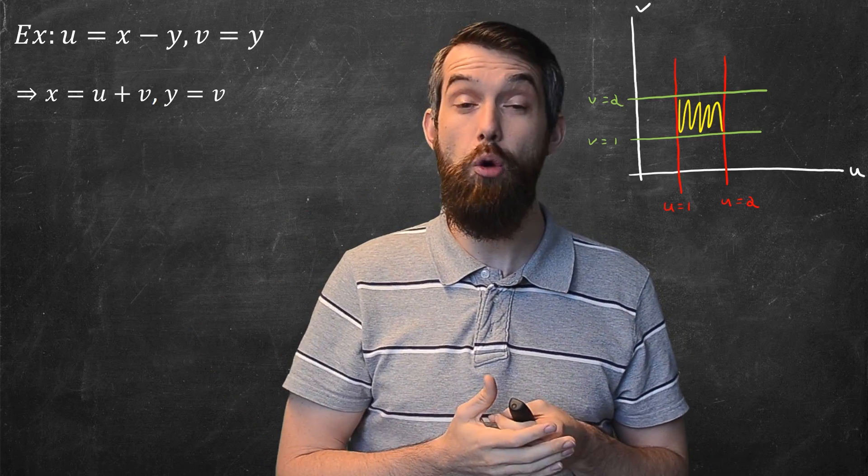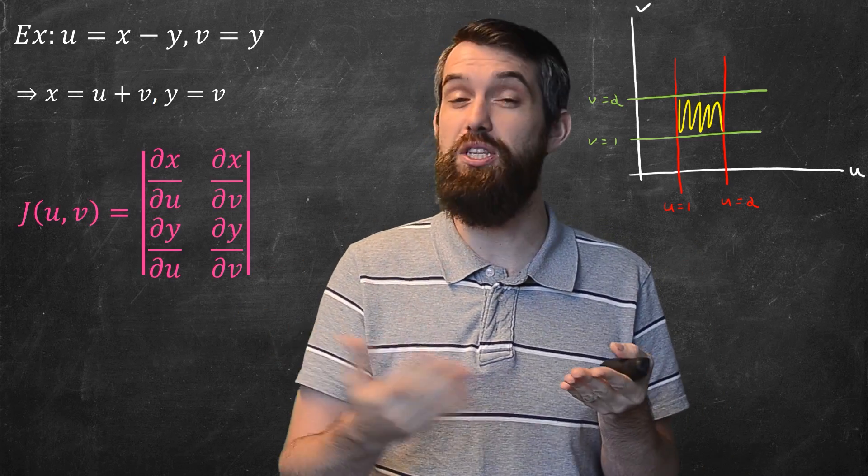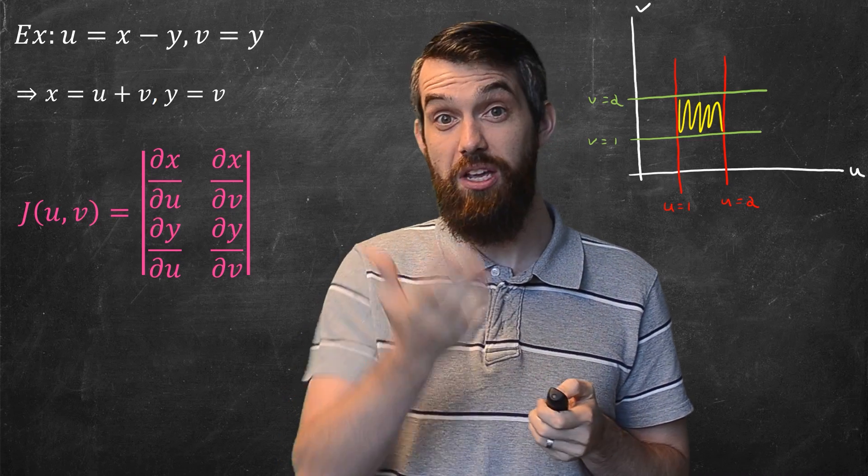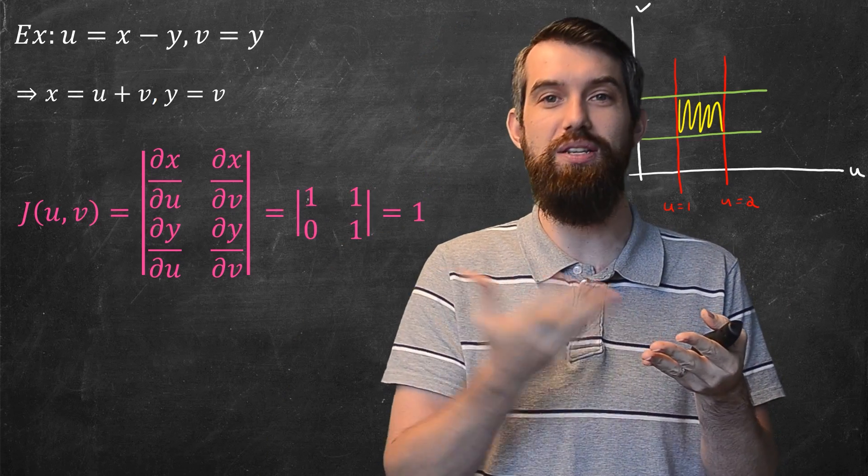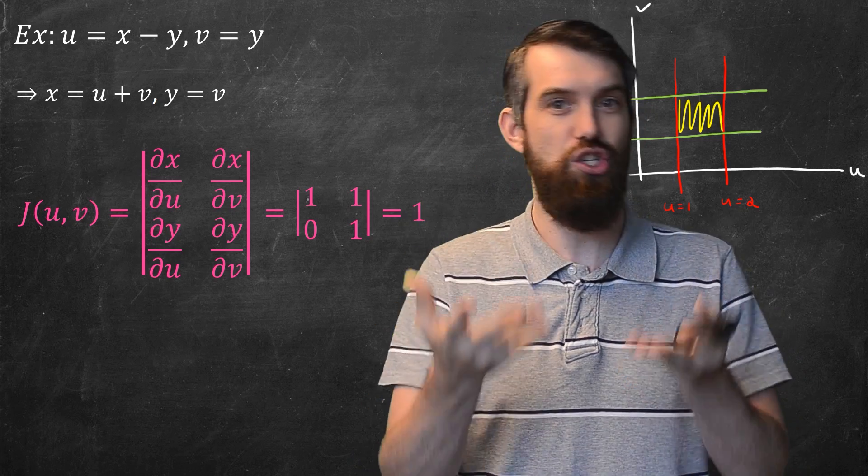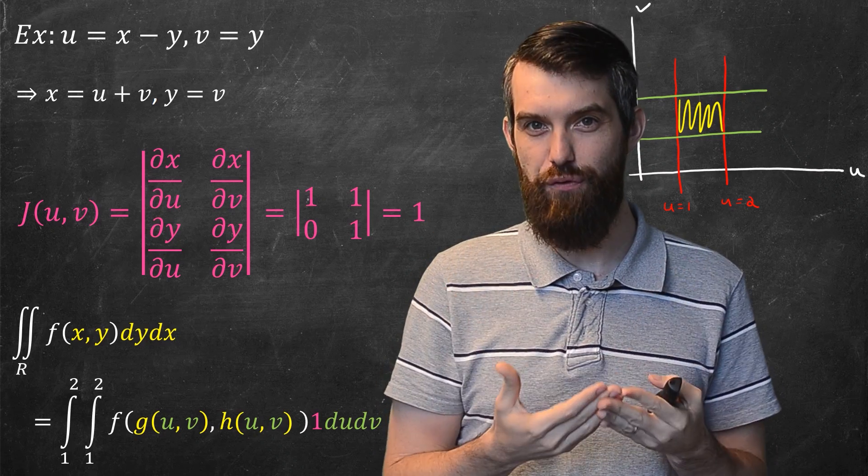All right, so let's compute out that Jacobian, this determinant. Well, most of these partials are straightforward. The partial of x with respect to u? Well, it's just 1 and so on. So I can compute what these are going to be. It's just the determinant of the matrix 1, 1, 0, 1, and that's just equal to the value of 1. So in this case, the Jacobian is just multiplied by 1.